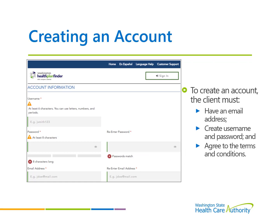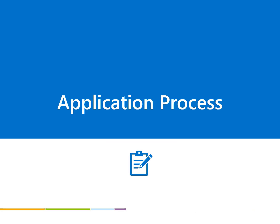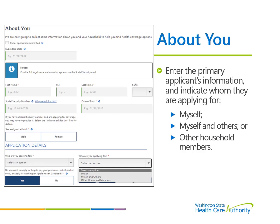To create an account, the client must have an email address, create a username and password, and agree to the terms and conditions. The About You page is where the primary applicant's basic information will be entered. Enter the required information to include name, date of birth, sex assigned at birth, and who all is applying for coverage — whether the client is applying only for themselves, themselves and others, or for other household members.